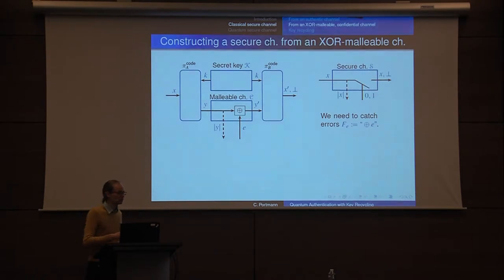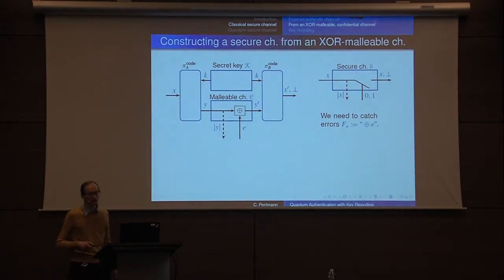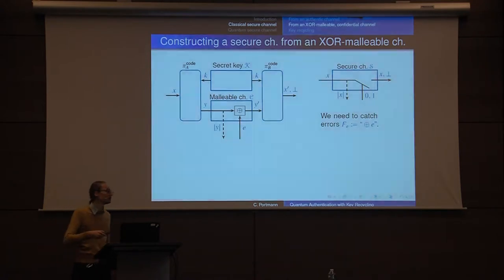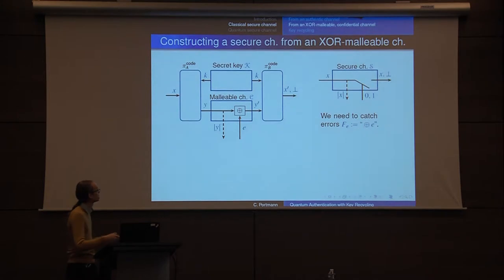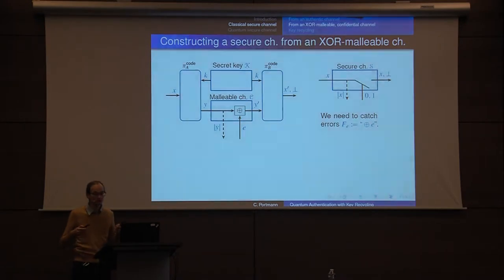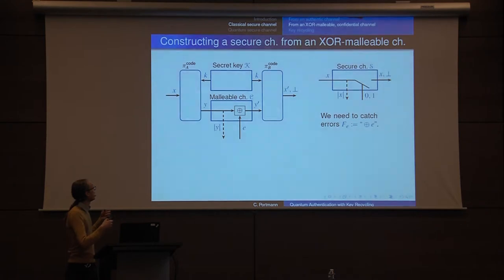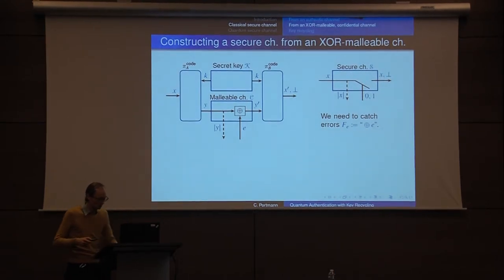Now we have an XOR-malleable channel and we want to construct a secure channel. A standard authentication protocol won't do it in a generic way — we know that authenticate-then-encrypt is not the same as encrypt-then-authenticate. The only thing Eve can do is bit flips, so we need to detect bit flips. What we do is encode X into some Y using a code that detects bit flips.